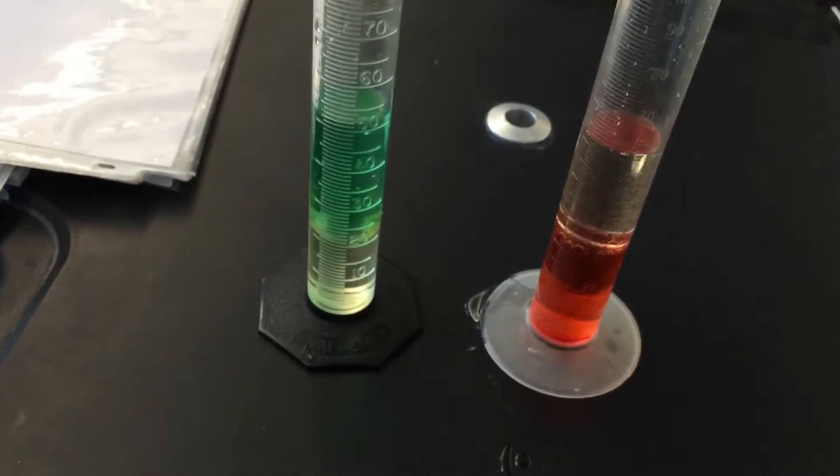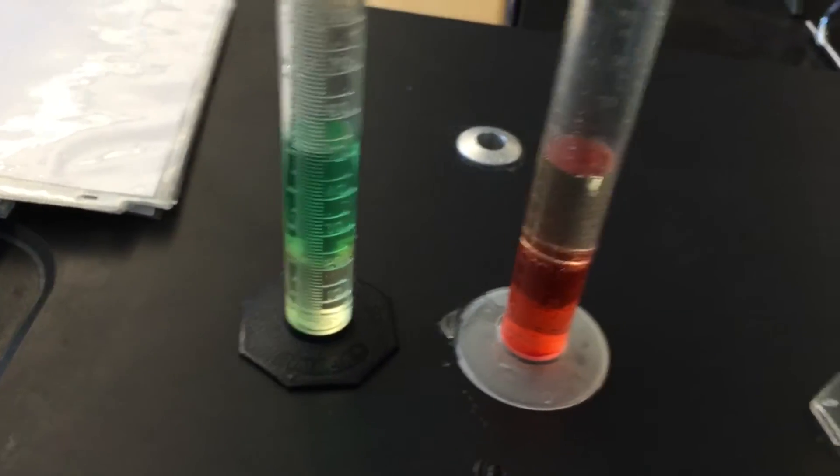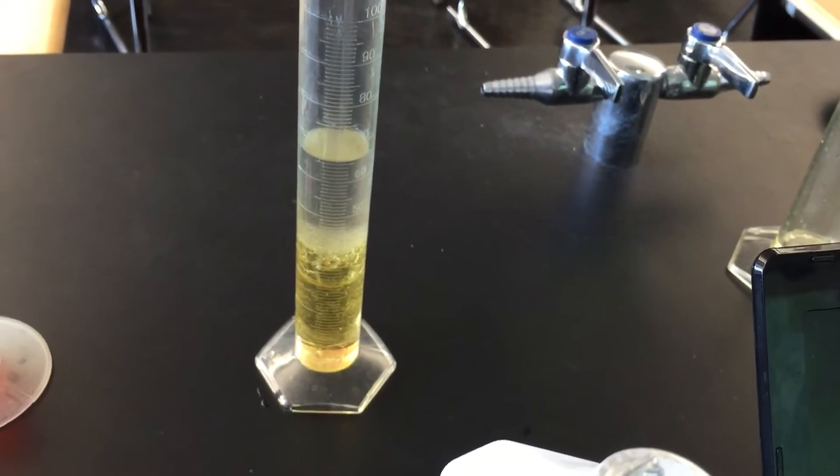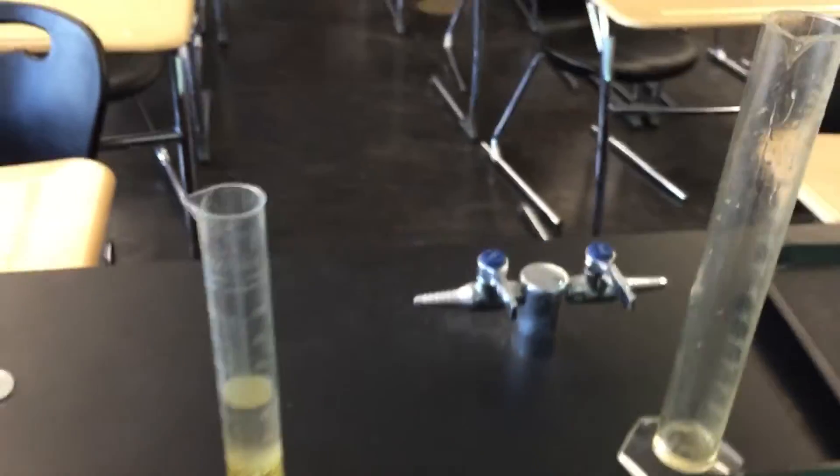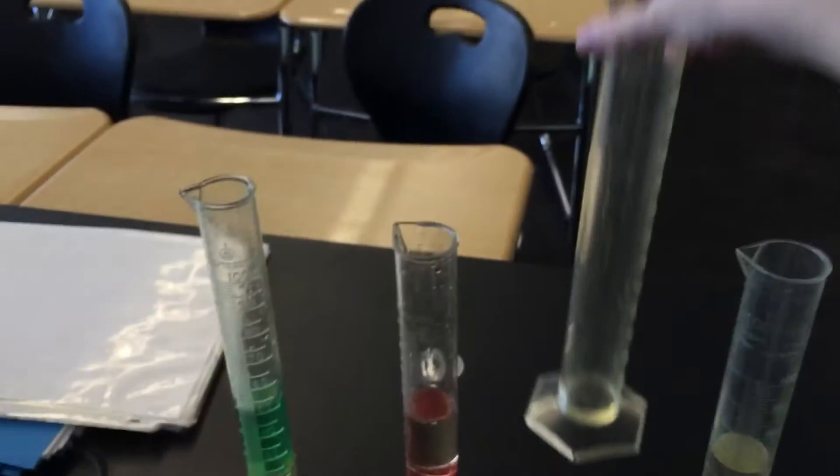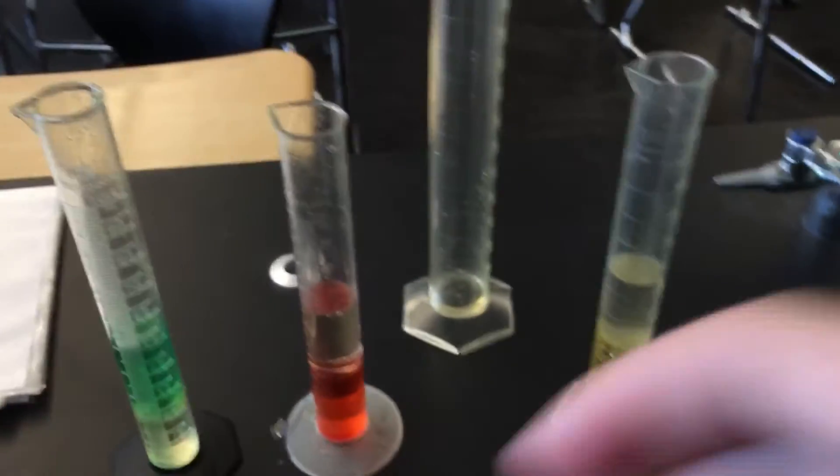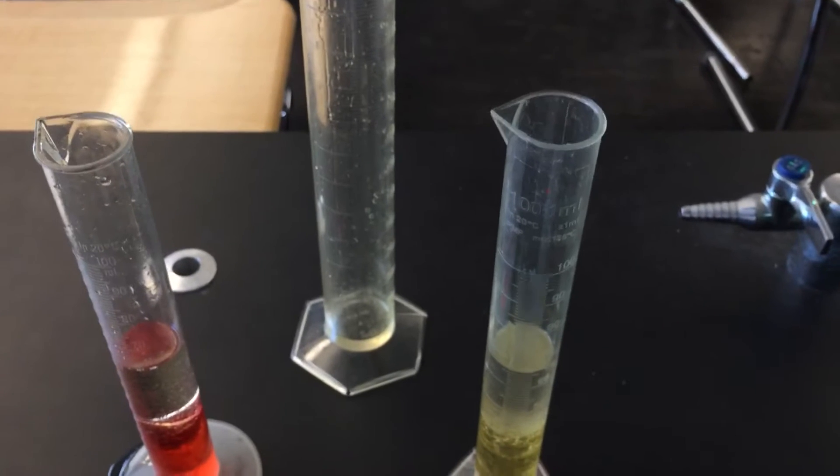And so these are the three pictures that you are going to draw in. So we've got, this is experiment one, two, and then three. Now, when we flip over your paper, we're going to mix all of these guys together and see how many layers we see. So I'm going to start with this one since it has the thickest liquid in it.